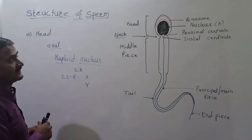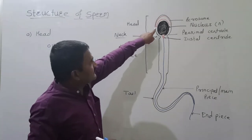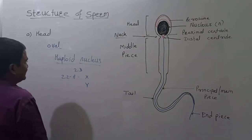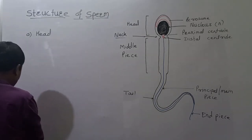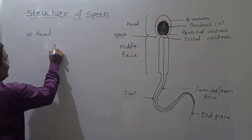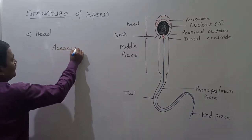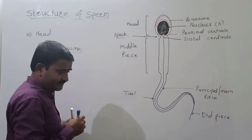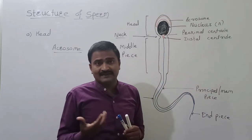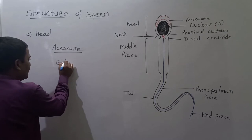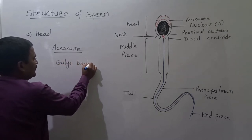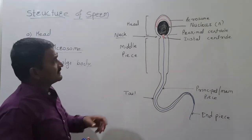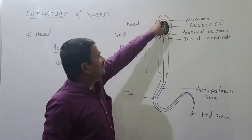The anterior part of the nucleus is covered by a cap-like structure. This cap-like structure which covers the nucleus is called the acrosome. The acrosome is a bag-like structure. This acrosome is formed from the Golgi complex, or Golgi body — a bag-like structure that covers the nucleus present in the head.